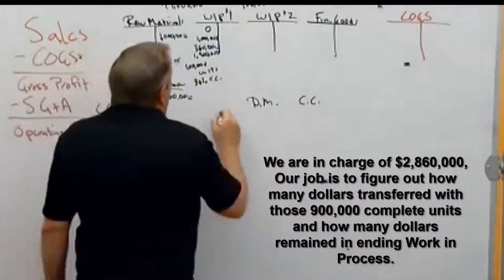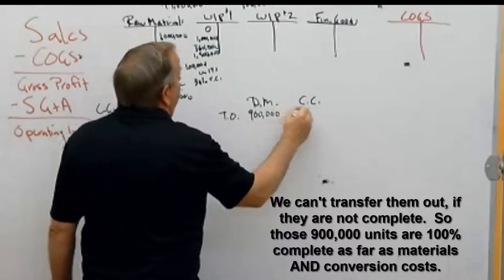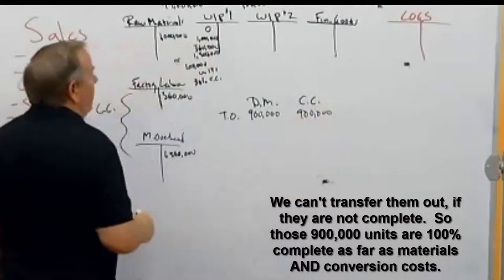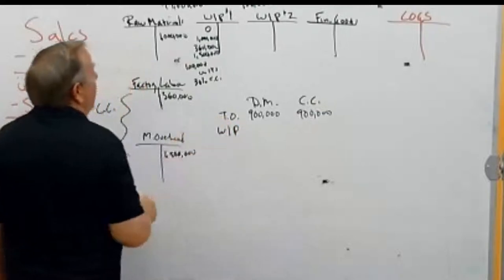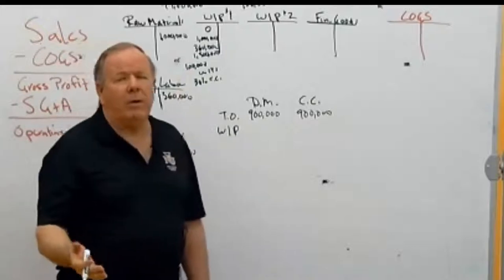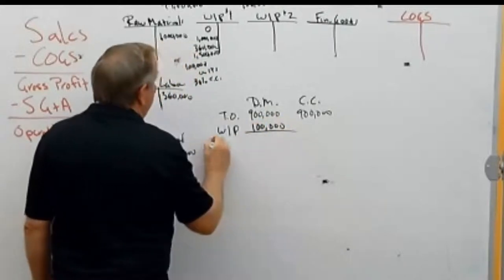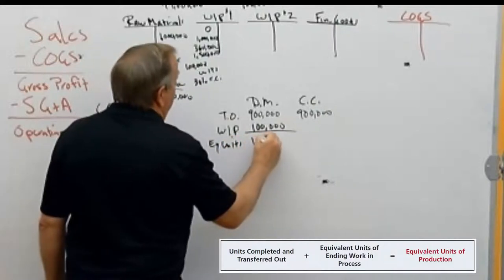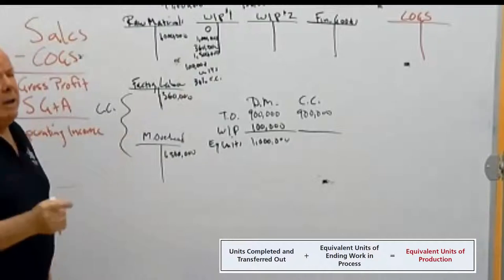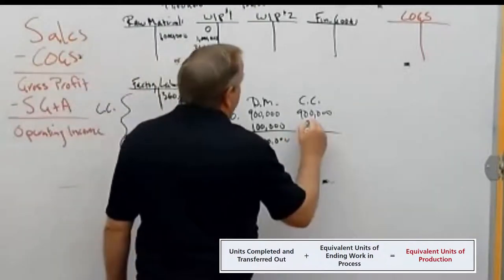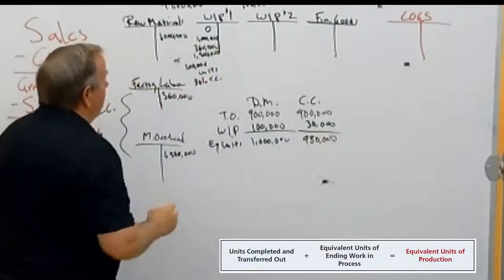Now let's figure out equivalent units of work. For units transferred out, that's 900,000 equivalent units — we can't transfer them out unless they're complete. For ending work in process, those 100,000 units are 100% complete for materials since materials are added at the beginning, giving us 1,000,000 equivalent units for materials total. For conversion costs, 100,000 units at 30% complete equals 30,000 equivalent units, giving us 930,000 total equivalent units for conversion costs.